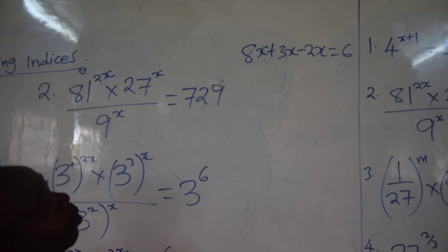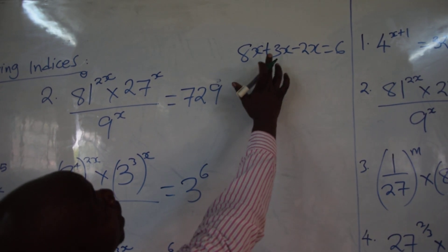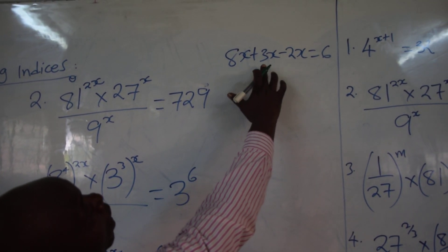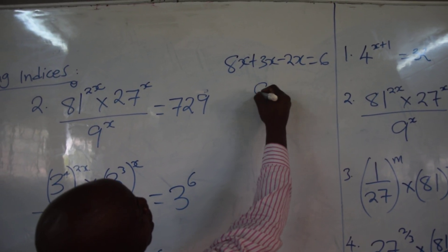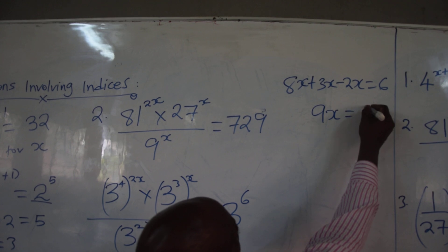From there, you put the like terms together, 8x plus 3x minus 2x, that is 11x minus 2x, you get 9x equals to 6.